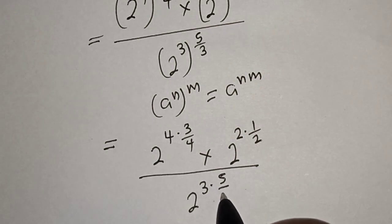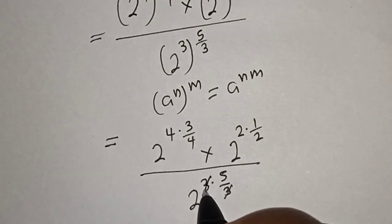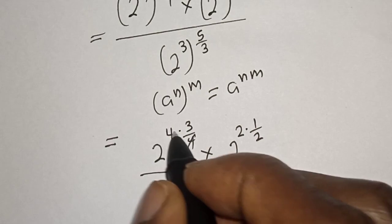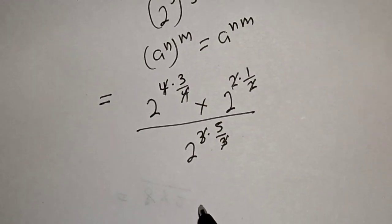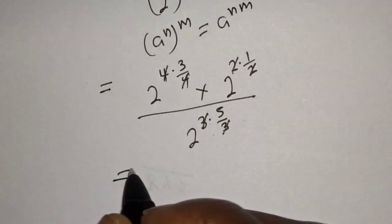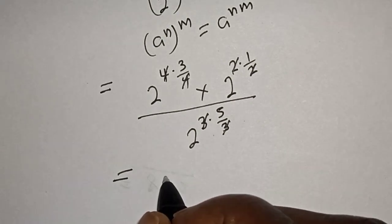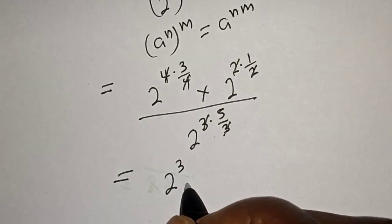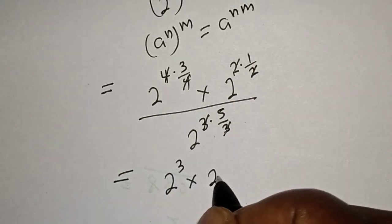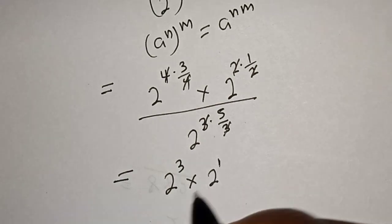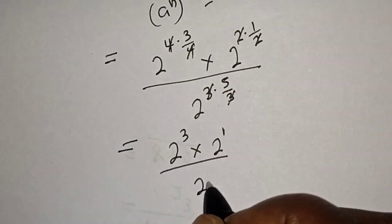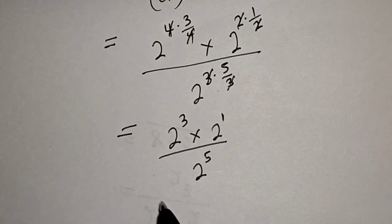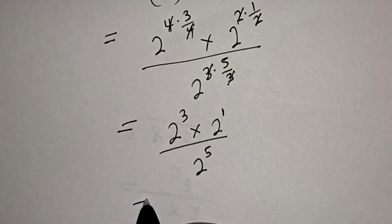This one will cancel this, this one will cancel this, and this one will cancel this. This is equal to 2 raised to power 3, multiplied by 2 raised to power 3, multiplied by 2 raised to power 1, divided by 2 raised to power 5.